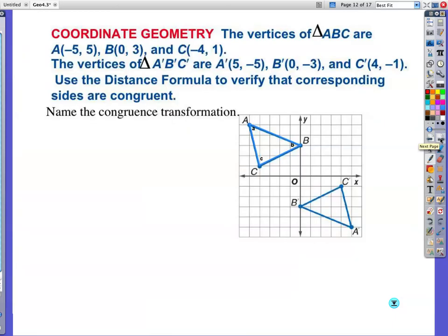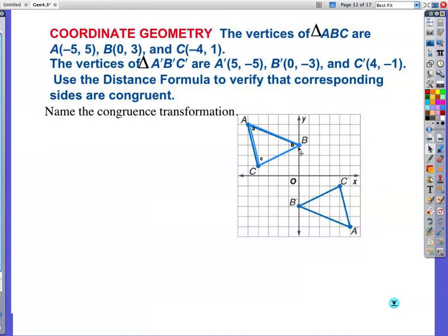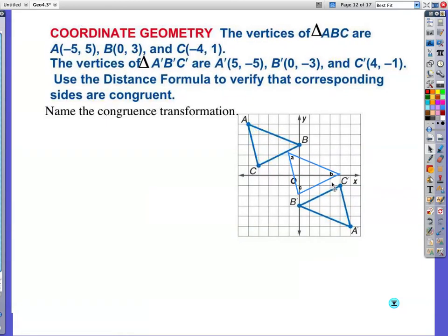Here's a long problem. The vertices of triangle ABC are given, and then they also have the vertices of triangle A prime, B prime, C prime. Use the distance formula to verify that the corresponding sides are congruent. And it also says name the transformation that's happening here. And if you can see here, it's not a slide. And if I were to reflect, A would come over here, B would end up over here, C would end up down here. So it's not a reflection. So it has to be a rotation.